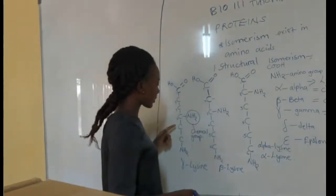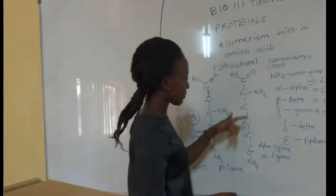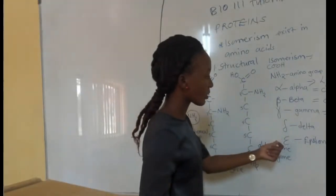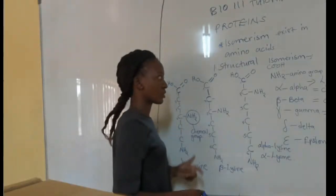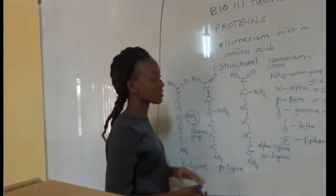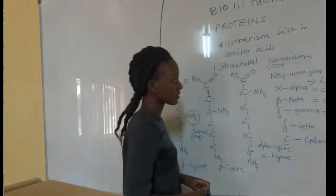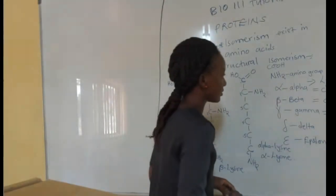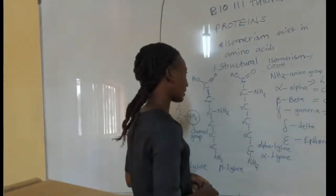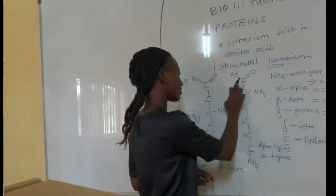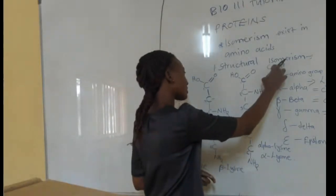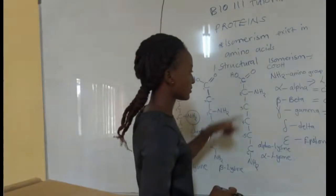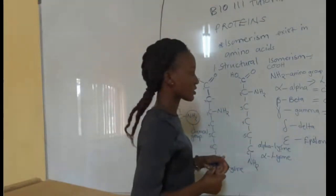That concludes structural isomerism with the example of lysine, which has six carbon atoms in its structure. All structures where the amino group changes position along carbon atoms 2 through 6 are structural isomers of each other. Carbon number 1 should not be considered because it carries the carboxyl functional group.